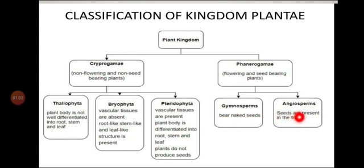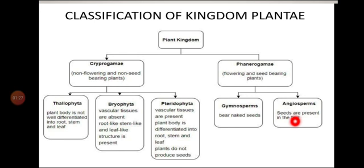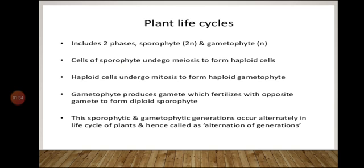The 5th division, that is Angiosperms, is deleted for this academic year 2021 from your syllabus. So we are not going to study the salient features of Angiosperms and its subdivisions — Dicotyledons and Monocotyledons — as that part of the chapter is deleted. Now let us move to the next part of the chapter: Plant Life Cycles and Alternation of Generations.